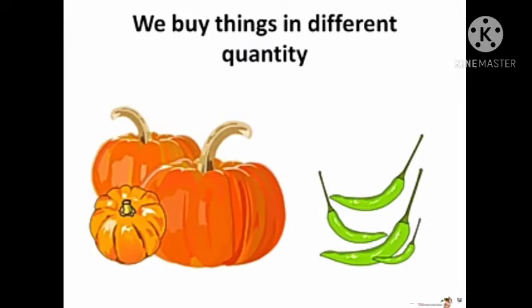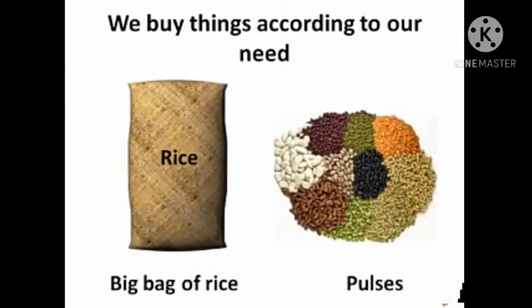When we buy a pumpkin, we can buy a heavy one. But we don't need all things in the same quantity. Like when we buy chilies, we buy them in small quantity. We don't want pulses as much as rice or wheat. So when we buy different things in different quantities, we must ensure we buy things according to our need.